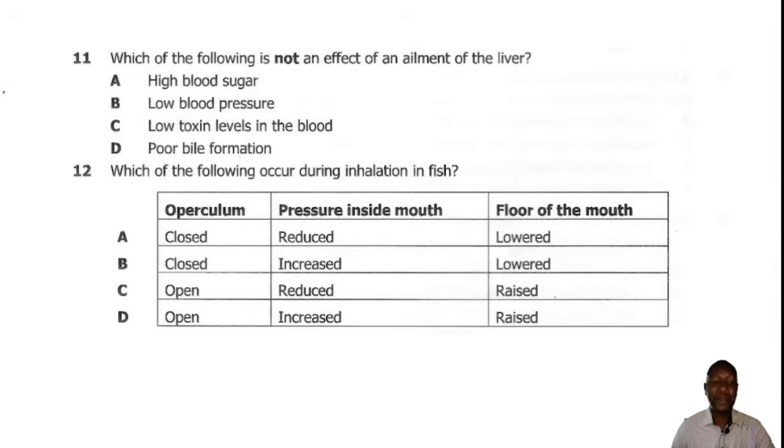Question 11. Which of the following is not an effect of an ailment of the liver? So an ailment is simply a disease. The liver has quite a number of functions in the body. It deals with blood sugar levels, it also deals with blood formation and also detoxification. But it doesn't deal with blood pressure. So the correct answer is B, low blood pressure.